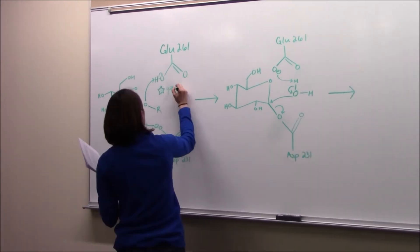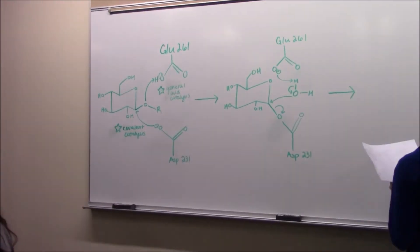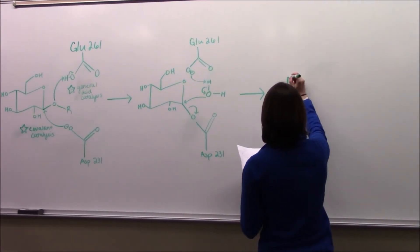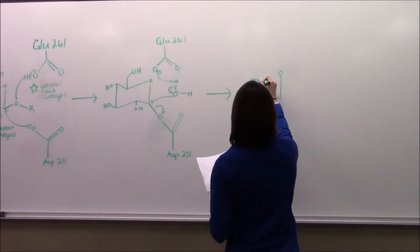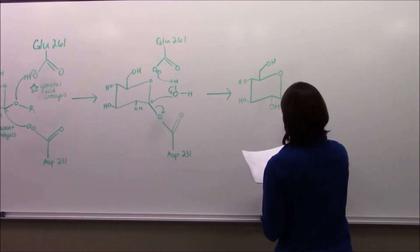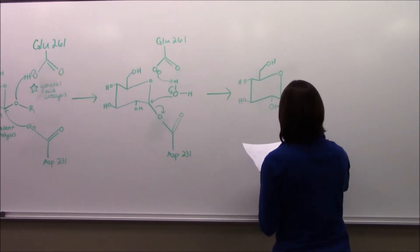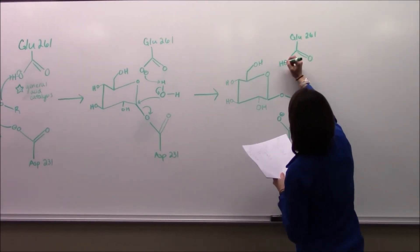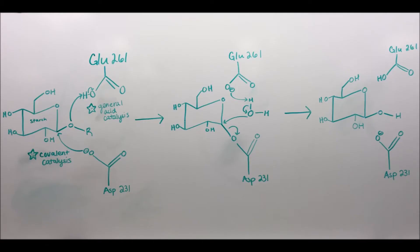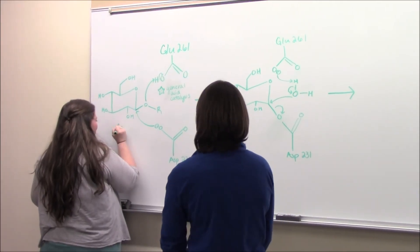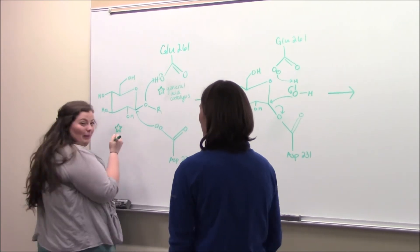To start the process, negatively charged aspartic acid 231 attacks the anomeric carbon of the starch molecule. The oxygen attached to the carbon becomes protonated by glutamic acid, which becomes deprotonated. After the oxygen attached to the R group leaves the active site, a water molecule enters and becomes activated by the deprotonated glutamic acid. The water molecule then hydrolyzes the covalent bond between the anomeric carbon and the aspartic acid. This completes the catalytic cycle and the active site is regenerated. Aspartic acid 328 is present in the active site but does not play a direct role; it is believed to elevate the pKa of glutamic acid 261 that protonates the oxygen of the glycosidic linkage.